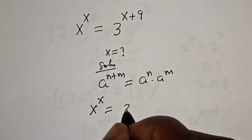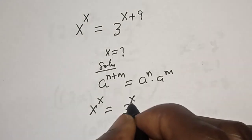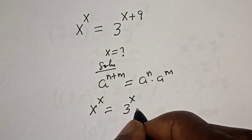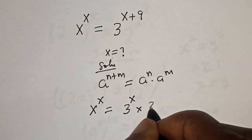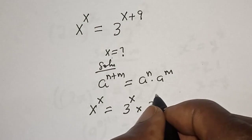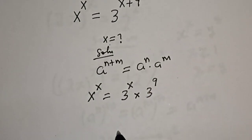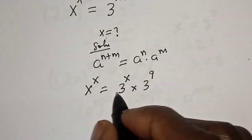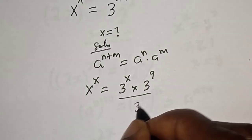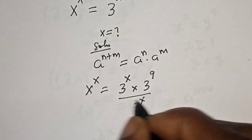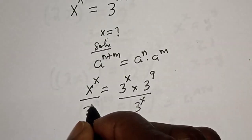...is equal to 3 to the power of x multiplied by 3 to the power of 9. Now let's divide both sides by 3 to the power of x: both sides divided by 3 to the power of x.